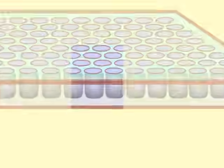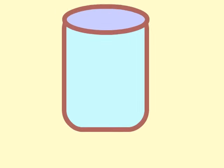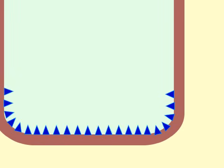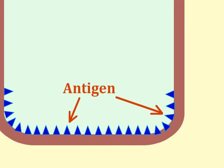To better understand how this assay is done, let's take a closer look at what happens in one of the wells of this assay plate. To perform the assay, the wells of the plate are coated with the antigen of interest. For commercial tests, this would be done by the manufacturer of the assay.